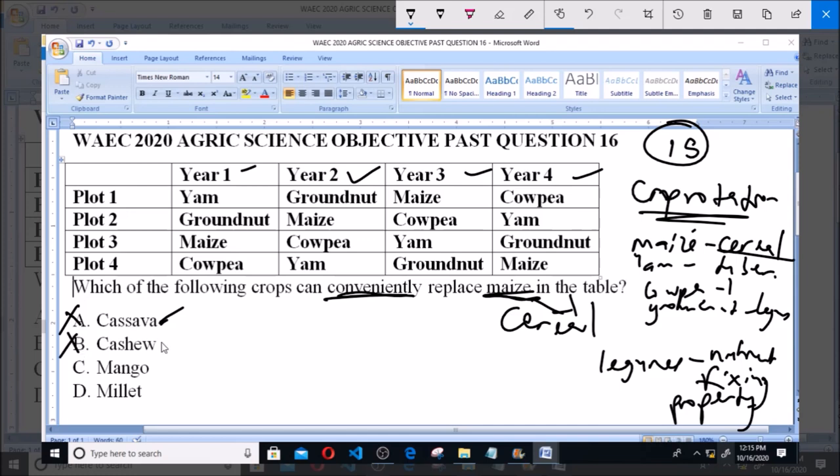Likewise, cashew is a tree crop, and hence cannot be used to replace maize.